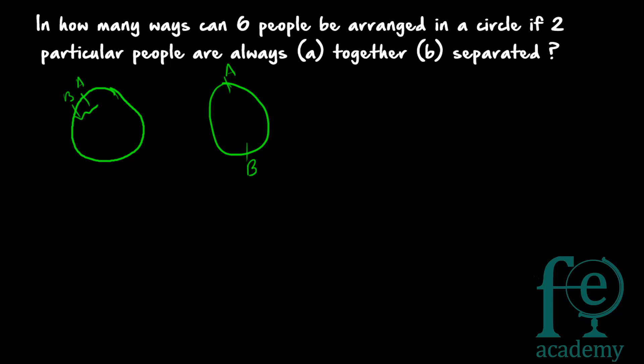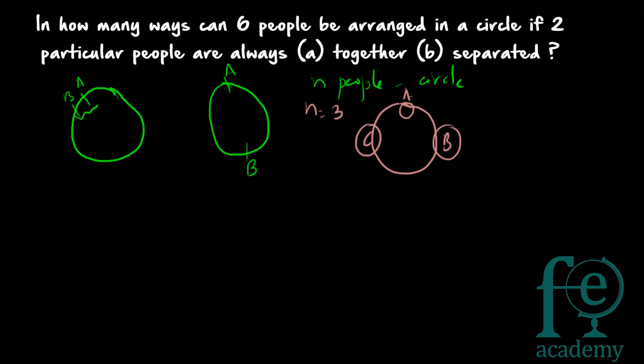First, let's derive the formula for arranging n people in a circle. If you arrange n people in a row it can be done in n factorial ways. Now for a circle, suppose n equals 3: if A is here, then B and C follow. If you rotate the circle once, the arrangement becomes the same as the first — so rotated arrangements need not be counted separately.